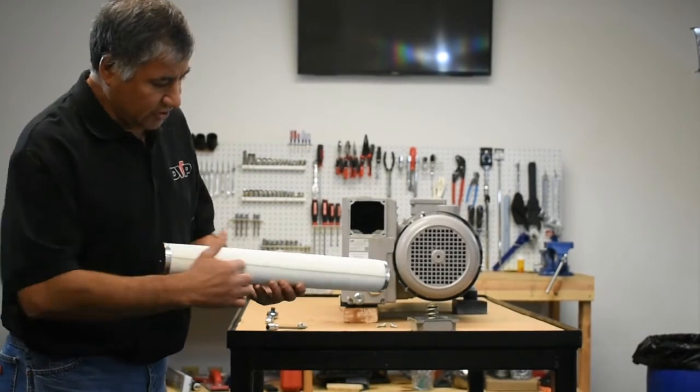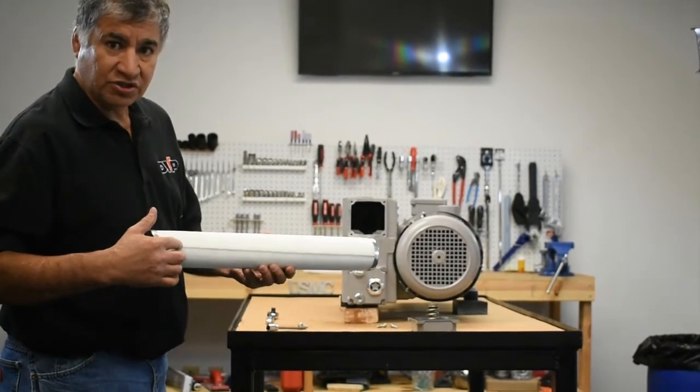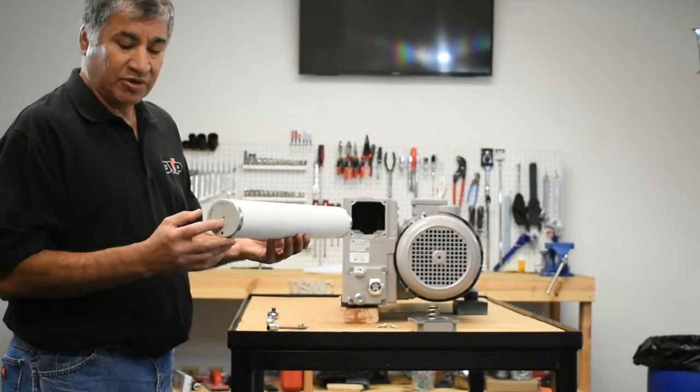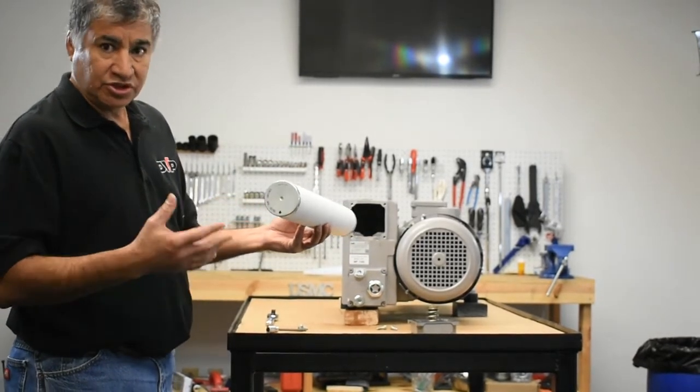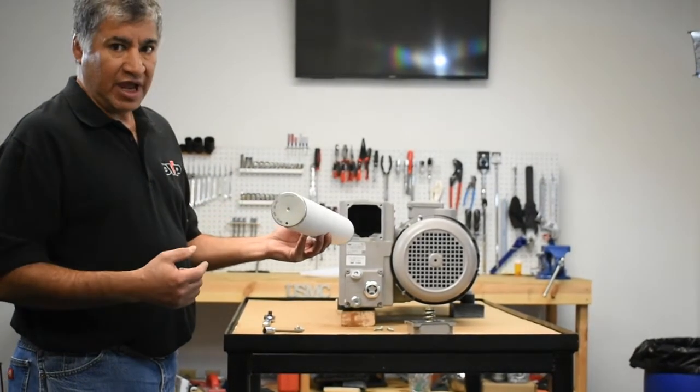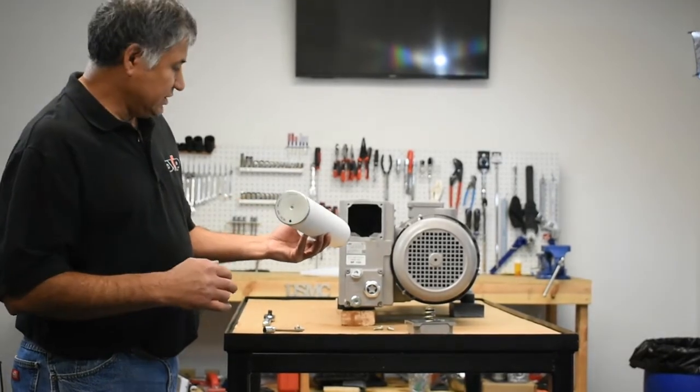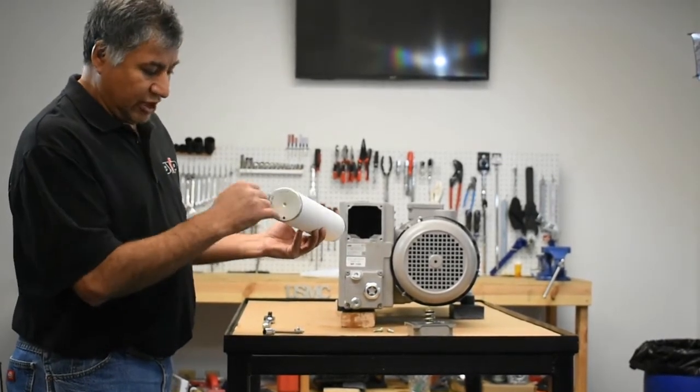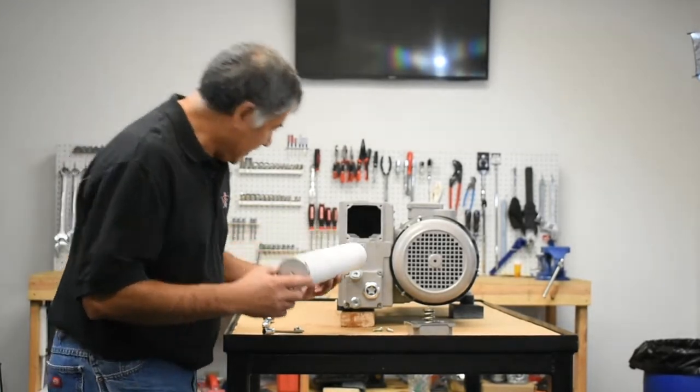Secondarily there, the actual joint where the felt is joined together is actually the bottom of the filter. So either one of those two methods can be used to determine how to install the filter back in. The arrow is quite easy. You just follow the arrow, the arrow points down.